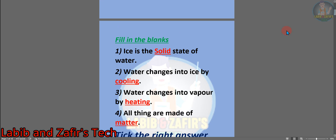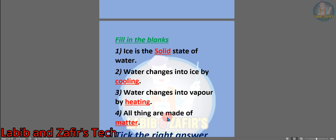At first we have some filling the blanks. Number 1: ice is the solid state of water. Number 2: water changes into ice by cooling. Number 3: water changes into vapor by heating. Number 4: all things are made of matter.